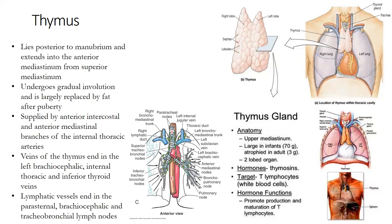The thymus veins drain into the left brachiocephalic, internal thoracic, and inferior thyroid veins. For lymphatics, the parasternal, brachiocephalic, and tracheobronchial lymph nodes are involved. The three high-yield facts: thymus is for T-cell maturation, it goes away/atrophies by puberty and is replaced with fat, and it's supplied by the internal thoracic artery.